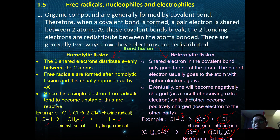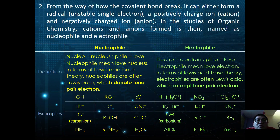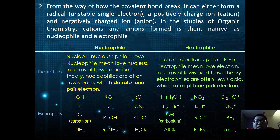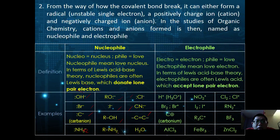The ions formed can be categorized as nucleophiles or electrophiles. Nucleophile means nucleus-loving. In Lewis acid-base theory, nucleophiles are Lewis bases because they donate an electron pair. Examples of nucleophiles include: hydroxide ion (OH⁻), RO⁻, Cl⁻, Br⁻, I⁻, cyanide ion, carbanions, alcohols, alkenes, amines (RNH2), and H2O.